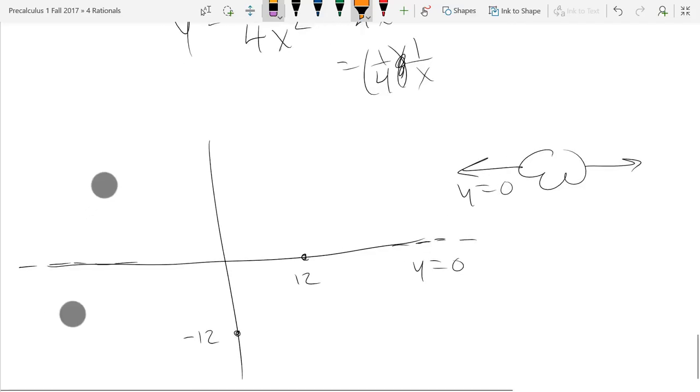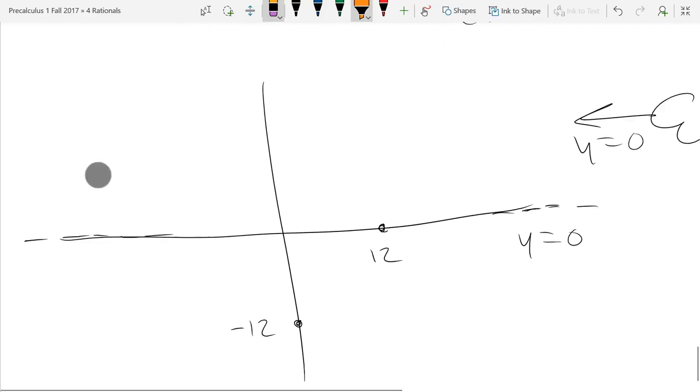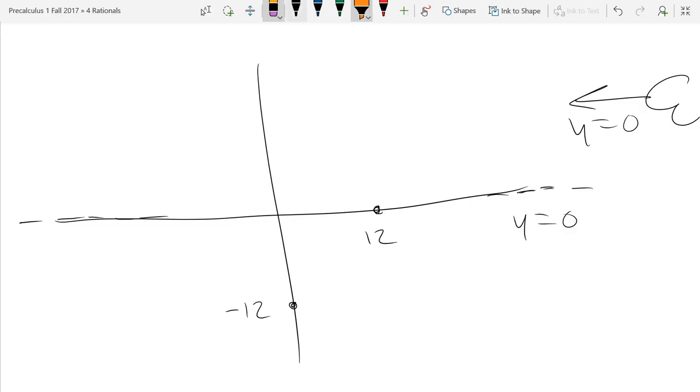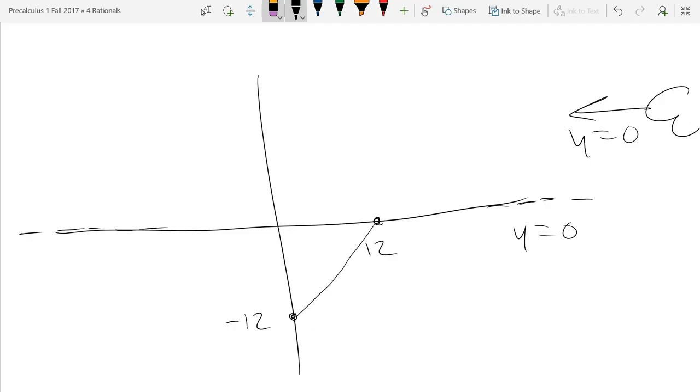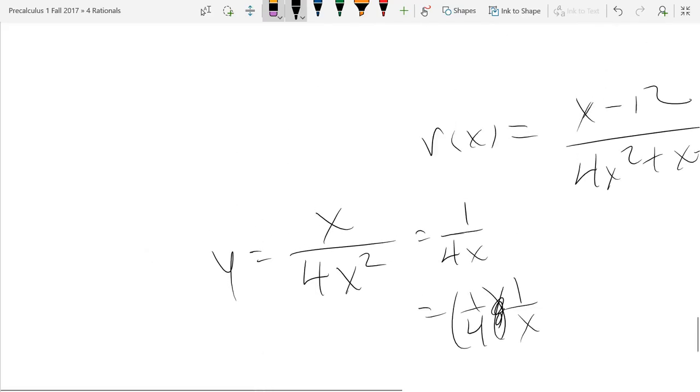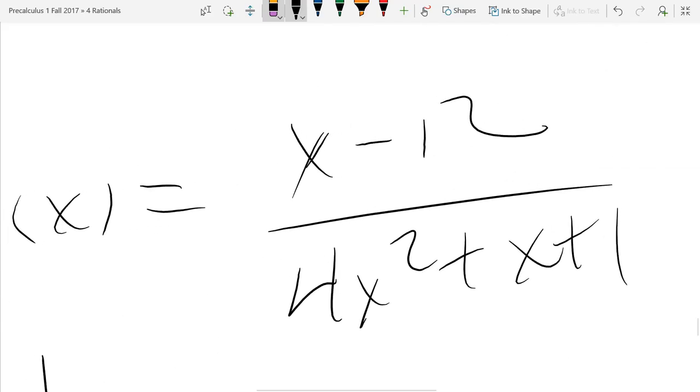So from here, we're going to connect the two intercepts together. Now, it's not going to be a perfectly straight line. Was 12, the x-intercept, was that cross or bounce? So let's look at our original function. Where did the x-intercept come from? Numerator or denominator? Numerator. So x minus 12, that is appearing one time, so it's going to be a cross-intercept.